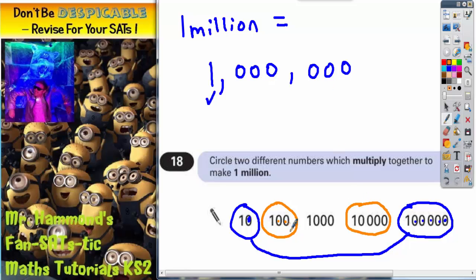Therefore ten thousand would pair up with one hundred. Because now there's one, two, three, four, five, six zeros altogether.